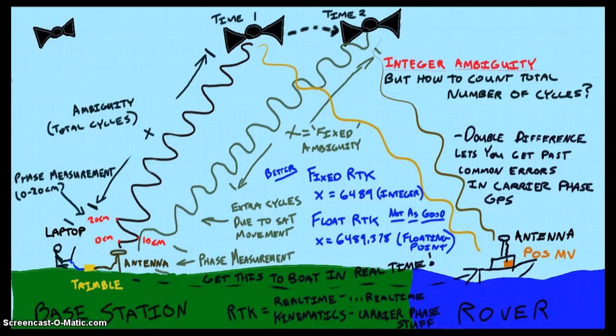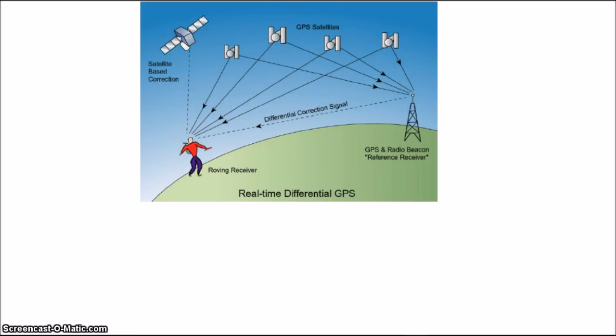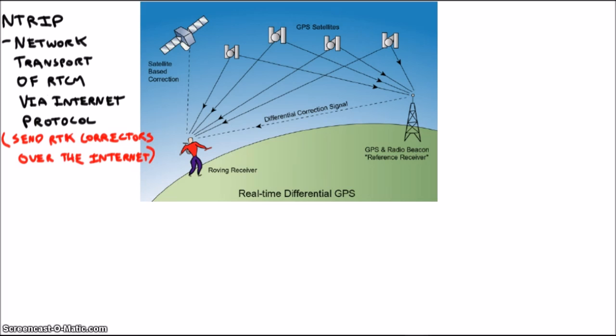Okay, so we should probably talk about NTRIP for a bit. NTRIP stands for the network transport of RTCM via internet protocol. Basically, it's a fancy way of saying I'm getting GPS stuff in RTCM messages and sending it over the internet to some other place.